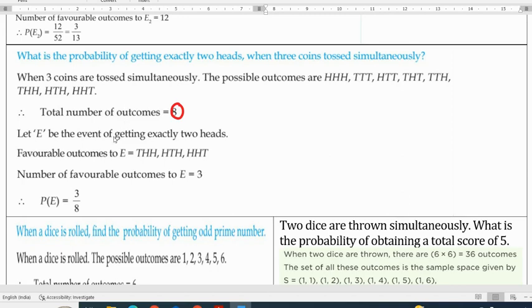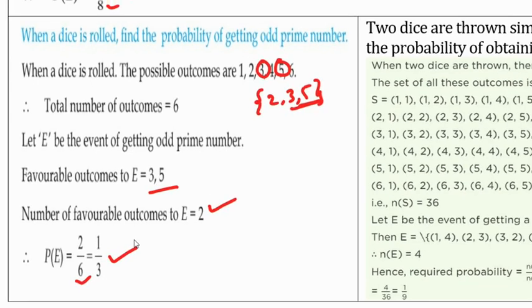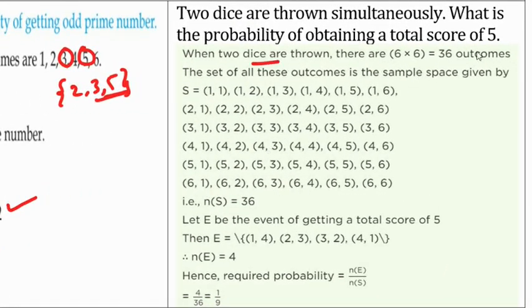Five coins thrown, 8 possibilities. At least getting 2 heads, number of favorable outcomes is 3, total possible outcomes is 8, so 3 by 8 is the probability. Single die throw getting odd prime number: odd prime numbers are 3 and 5, favorable outcome is 2, total outcomes are 6, so 2 by 6 which is 1 by 3. When 2 dice are thrown, score of 5: total possible outcomes 36. Combinations for sum of 5 are 1-4, 2-3, 3-2, 4-1, so 4 favorable outcomes. Probability is 4 by 36 which is 1 by 9.